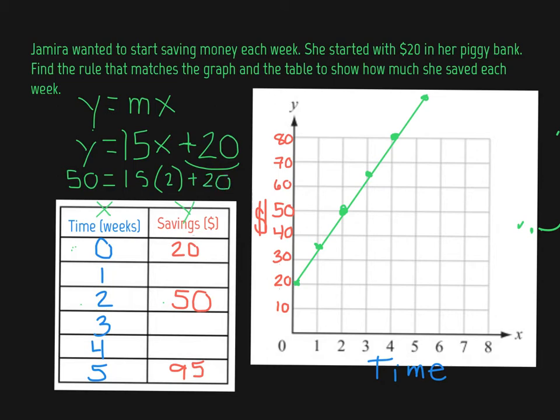Some order of operations. 15 times 2 is 30. 30 plus 20 is 50. So indeed that works out for that. That tells me that my rate that I'm changing by 15 was also correct.